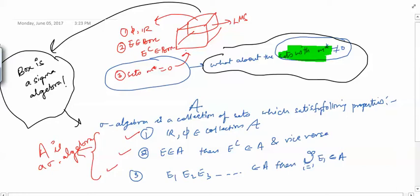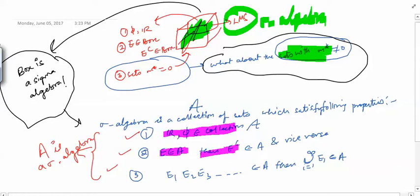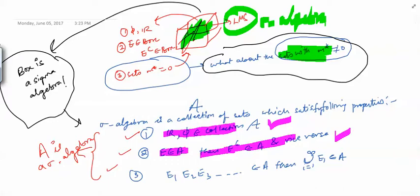Now we would like to prove that our box of all the Lebesgue measurable sets is a sigma algebra. You can clearly see that we have already proved the first property — both R and phi are inside our box — and we have already proved that if a set E is in the box, then its complement is also in the box and vice versa. So the first two properties have already been proved, and we are left with this third property which we have to prove.